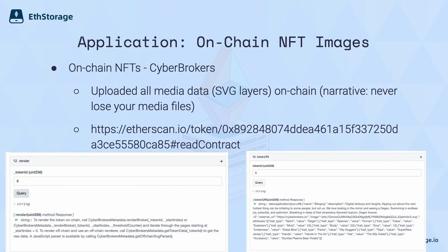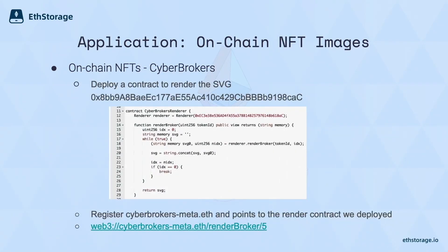What are the new applications that Web3 URL can enable? We believe there are tons. One natural application is on-chain NFT images. For example, cyber blocks upload all their metadata and SVG layers on-chain and compose them using smart contracts. Using Web3 URL, we deploy a contract that combines these layers and returns a string, and we can directly call this contract with a method to render any token's UI.